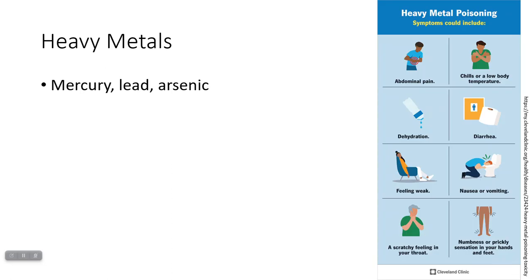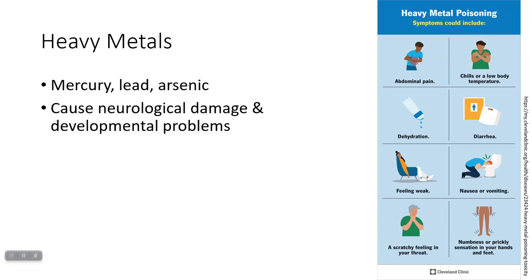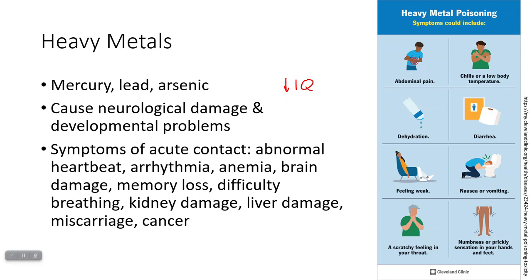Heavy metal contamination — things like mercury, lead, and arsenic — are dangerous to come in contact with. They can cause neurological damage, and if people are exposed during pregnancy, they can cause developmental problems. Mercury and lead can cause a decrease in the IQ of babies born to exposed mothers. If you have acute or very large-scale contact with these chemicals at one time, you can experience abnormal heartbeat (arrhythmia), anemia, brain damage, memory loss, difficulty breathing, kidney and liver damage, and if pregnant, miscarriage and cancer.